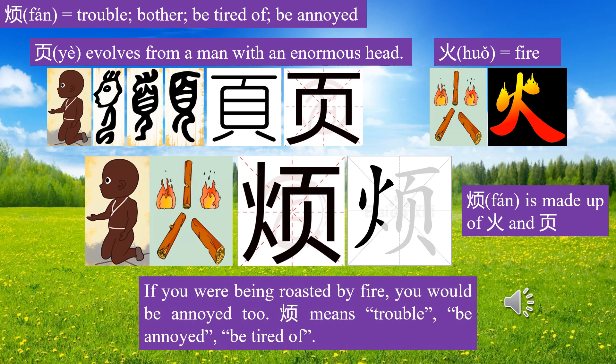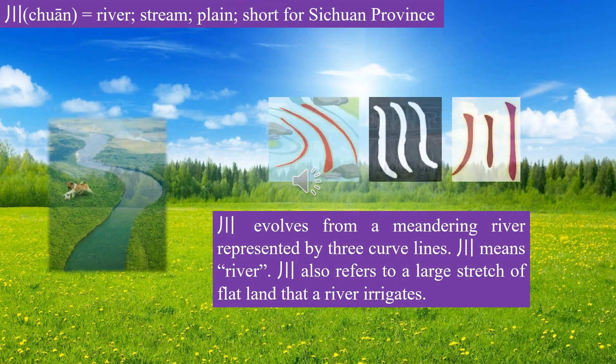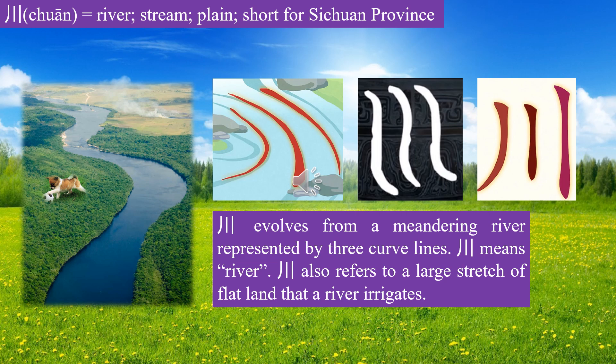Character Fan is made up of Huo and Ye. Ye evolves from a man with an enormous head. Huo means fire. If you were being roasted by fire, you would be annoyed too. Fan means trouble, be annoyed, be tired of.